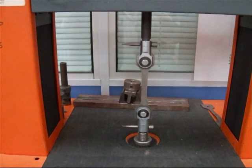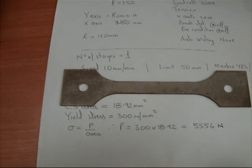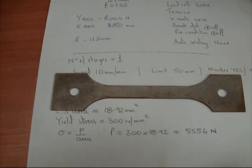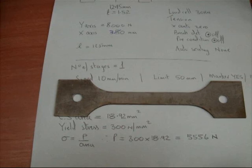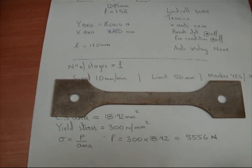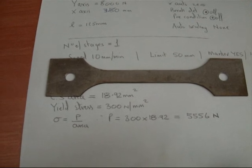This is the tensile test specimen. This is the tensile test specimen of length 125 mm, of width 12.45 mm, and of thickness 1.52 mm. The length of 125 mm is between the holes.